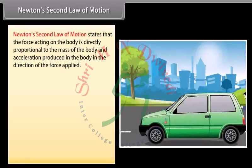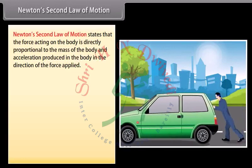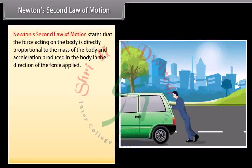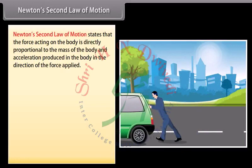Newton's second law of motion states that the force acting on the body is directly proportional to the mass of the body and acceleration produced in the body in the direction of the force applied. F is equal to M into A, where F is equal to force, M is equal to mass, A is equal to acceleration.